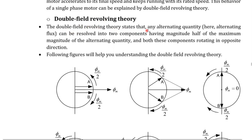In double field revolving theory, any alternating quantity — alternating flux — can be resolved into two components, each having magnitude half of the maximum magnitude, that is φm by 2, where φm is the maximum value of the alternating flux. Both these components are rotating in nature.